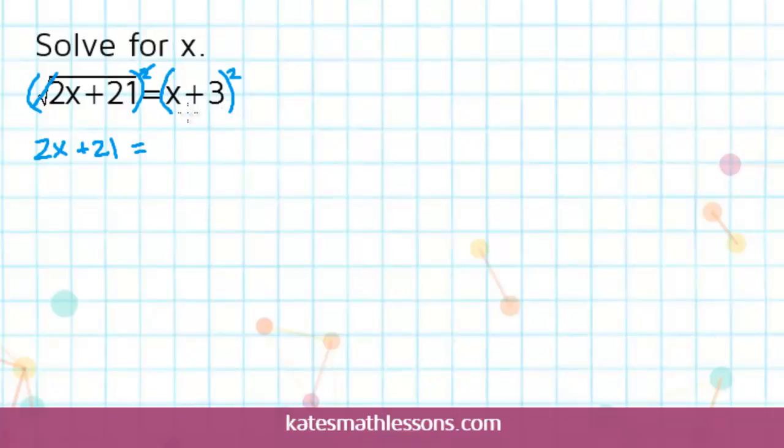Now be very careful when you square the right hand side. A common mistake is for students to just square the x and square the 3. What you have to be careful is when you have a binomial, when you have two terms, you need to make sure you write it out twice and then use FOIL to simplify it.